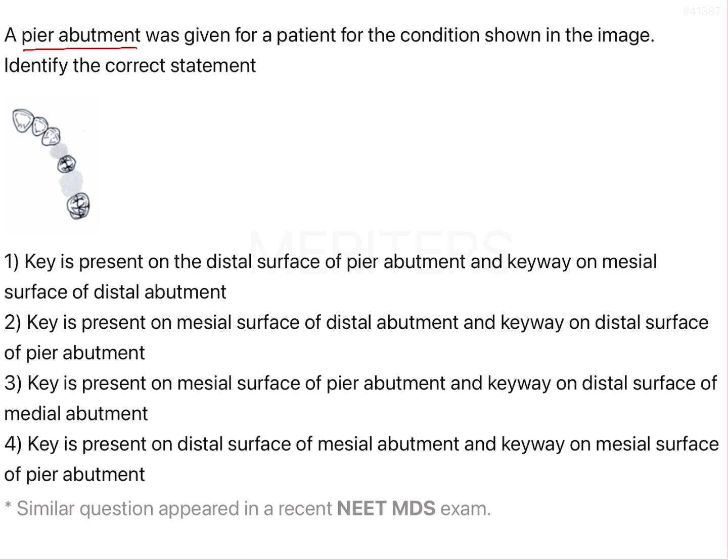In this image, as you can see, the first premolar and the first molar are missing, and your second premolar is having edentulous spaces present mesial and distal to it. So basically here, your second premolar is your pier abutment.